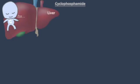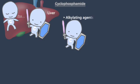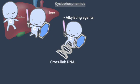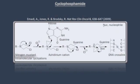Cyclophosphamide is an inactive product that requires enzymatic and chemical activation at the liver. It exerts its effect through alkylation, producing interstrand DNA crosslinks. These DNA crosslinks account for its cytotoxic properties.